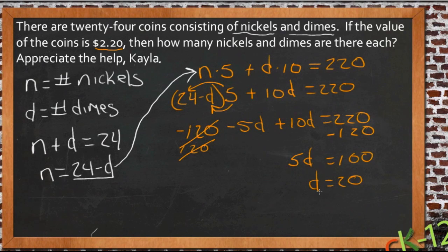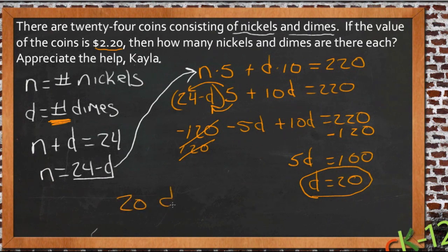So that tells us that the number of dimes we have is 20. Remember that d was the number of dimes. So if we have 20 dimes, if there are 20 dimes...